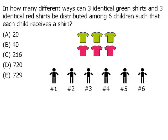Notice that the order in which we select these children does not matter. In other words, selecting child one, two, and three is the same as selecting child three, two, and then one. Since the order doesn't matter, we're looking at a combination question.